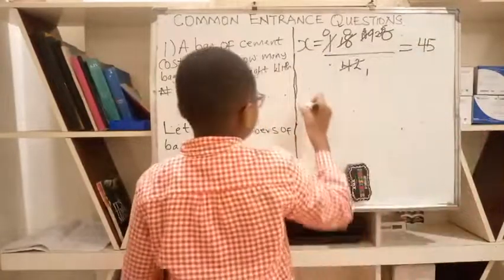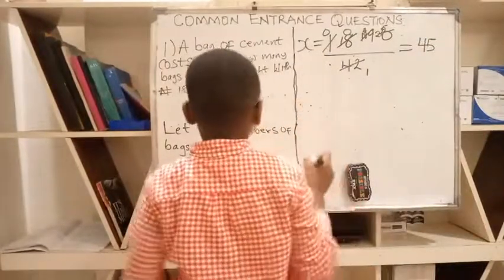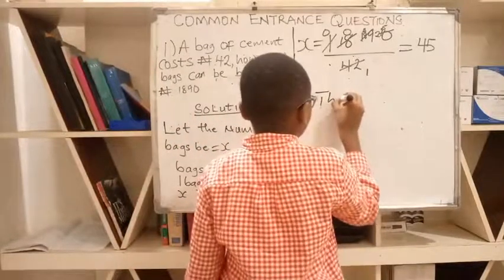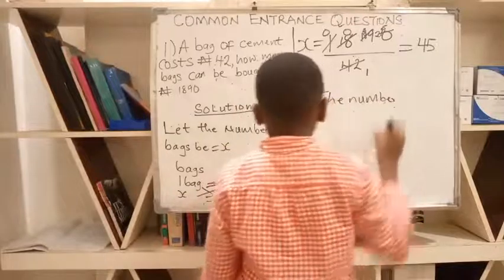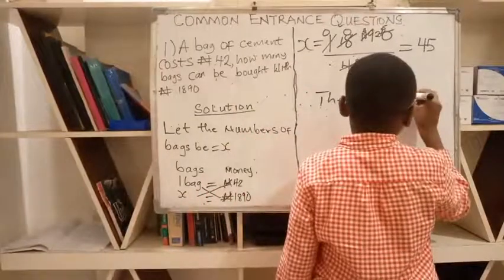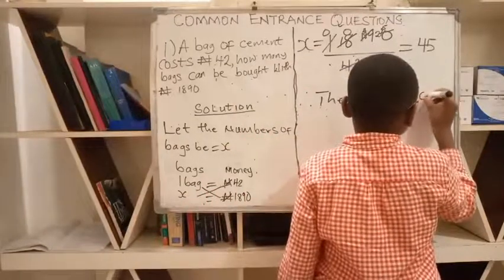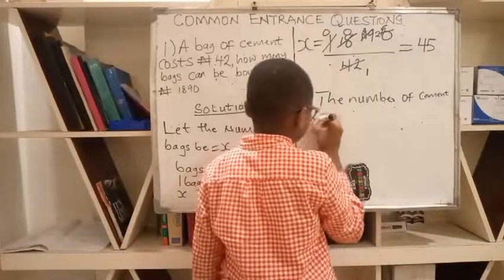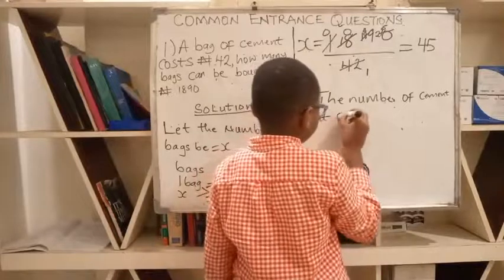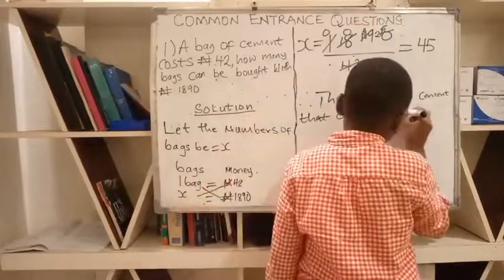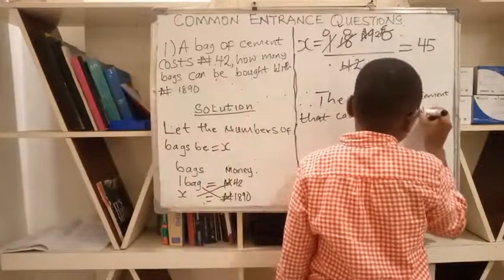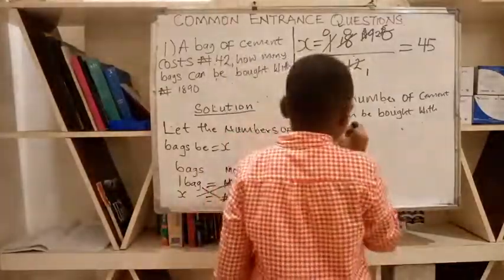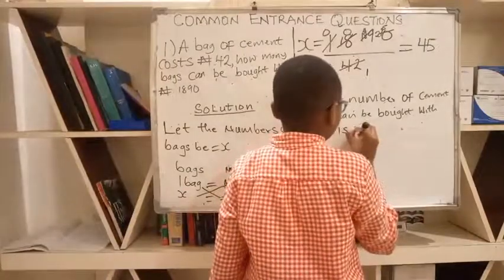Therefore, the number of cement bags that can be bought with 1890 is 45 bags.